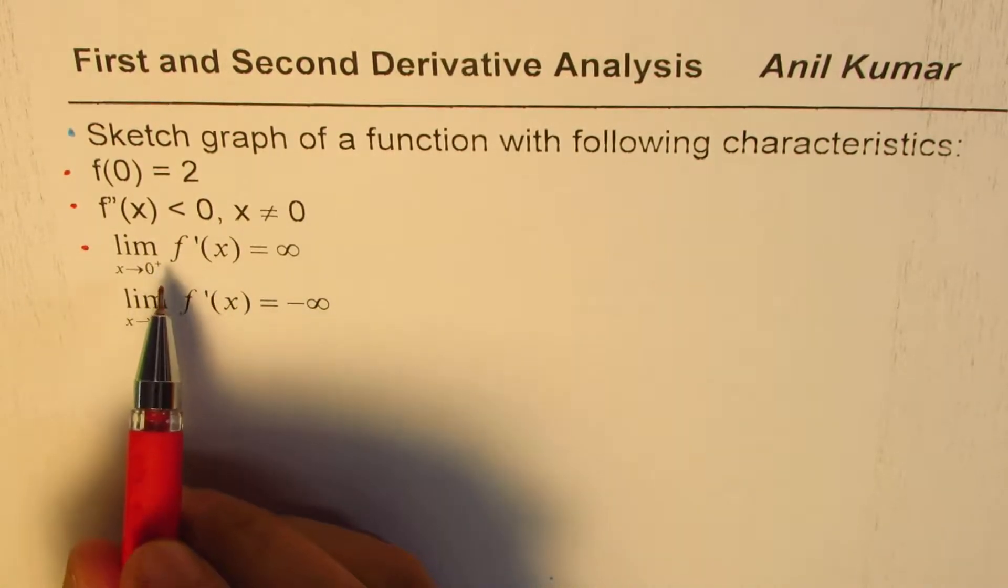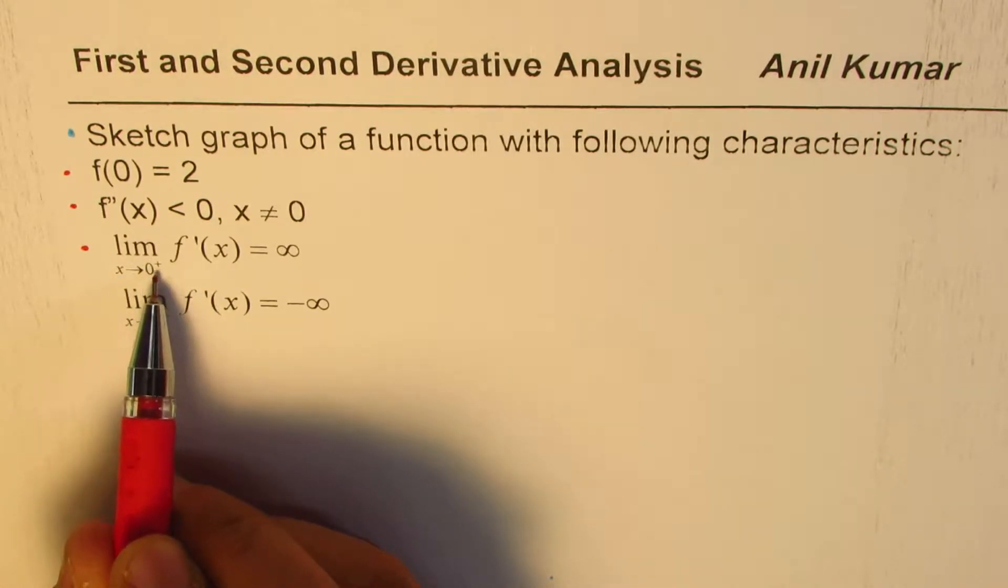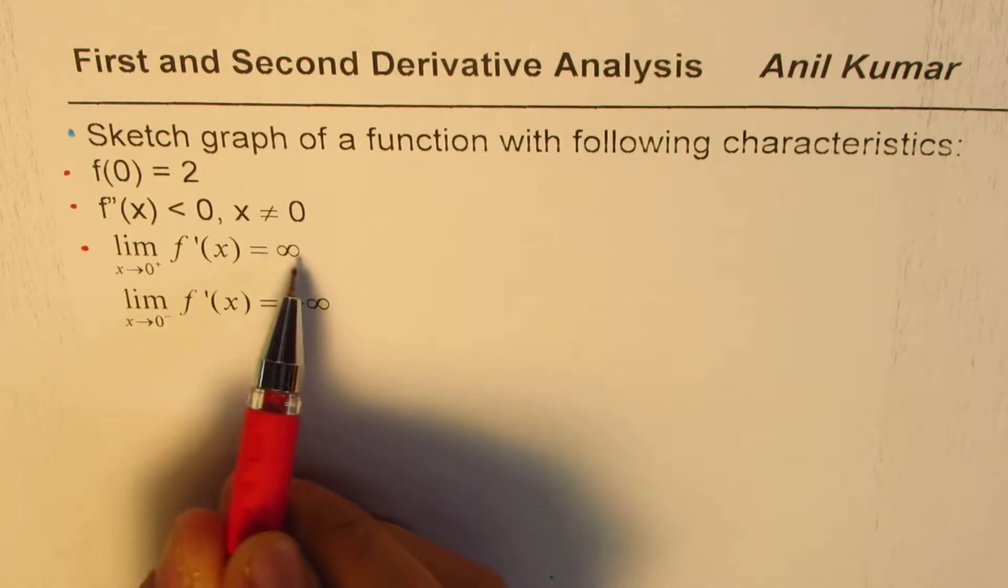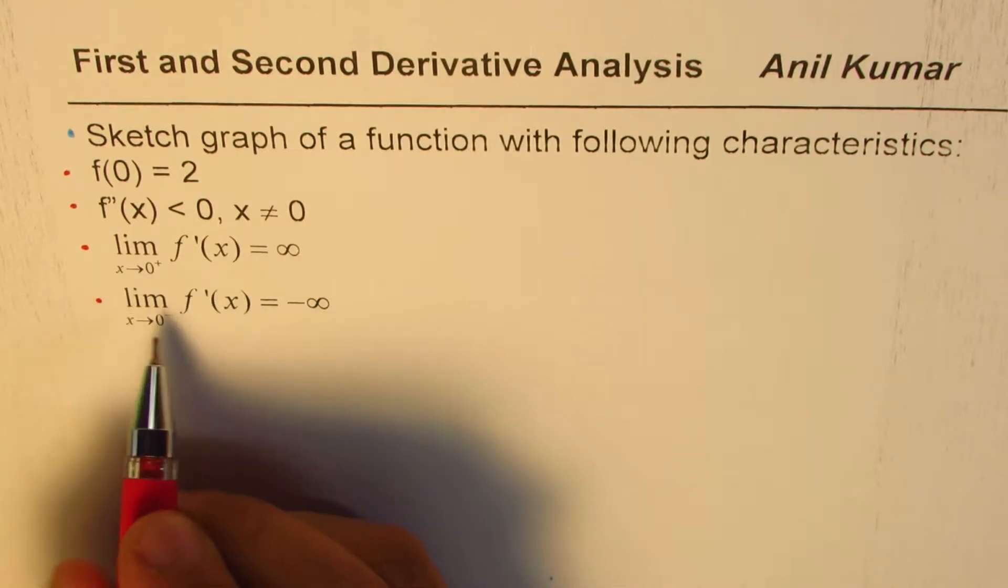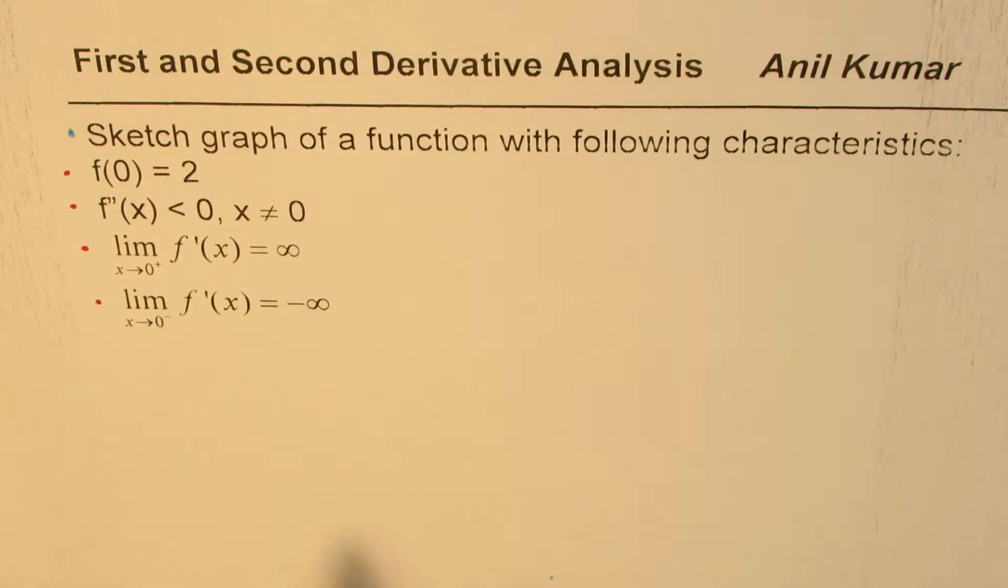The limit of the function, rather the limit when x approaches 0 from the right side, for the derivative of the function is positive infinity. And the limit when x approaches 0 from the left side, for the derivative of the function is negative infinity.